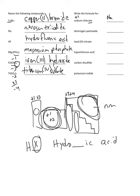Sodium chlorate: if something ends in '-ate,' that means it contains oxygen — in this case chlorine and oxygen. Chlorate is three oxygens, ClO3, with a charge of negative one. Sodium is plus one, chlorate is negative one — since they balance, it's a one-to-one ratio, giving the formula NaClO3.